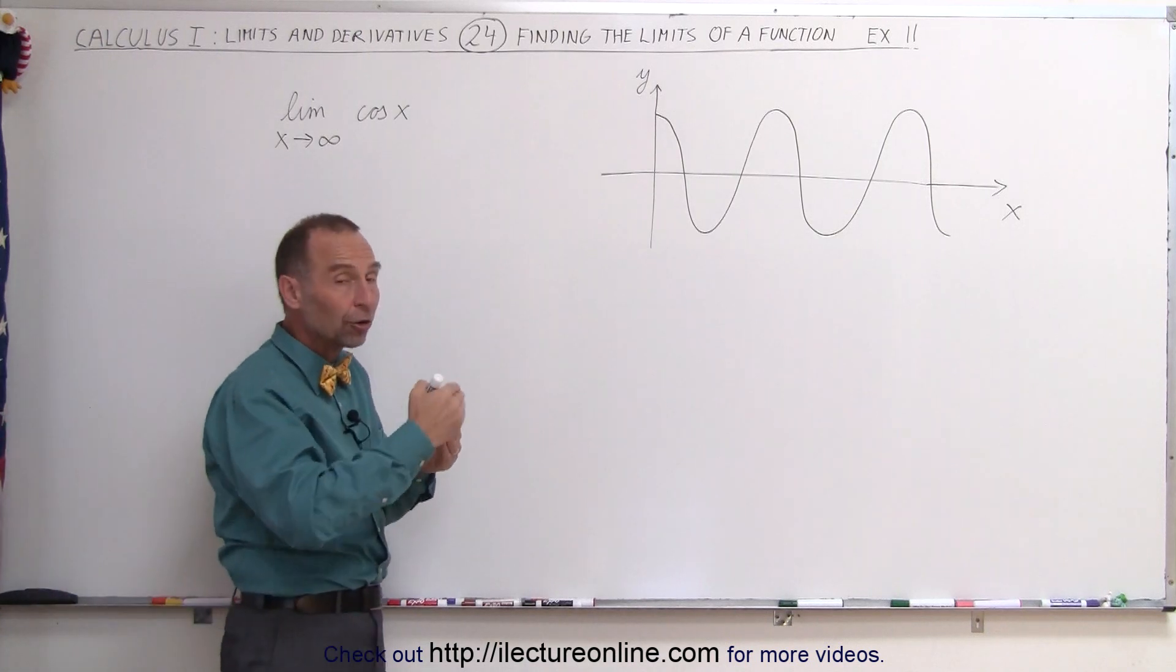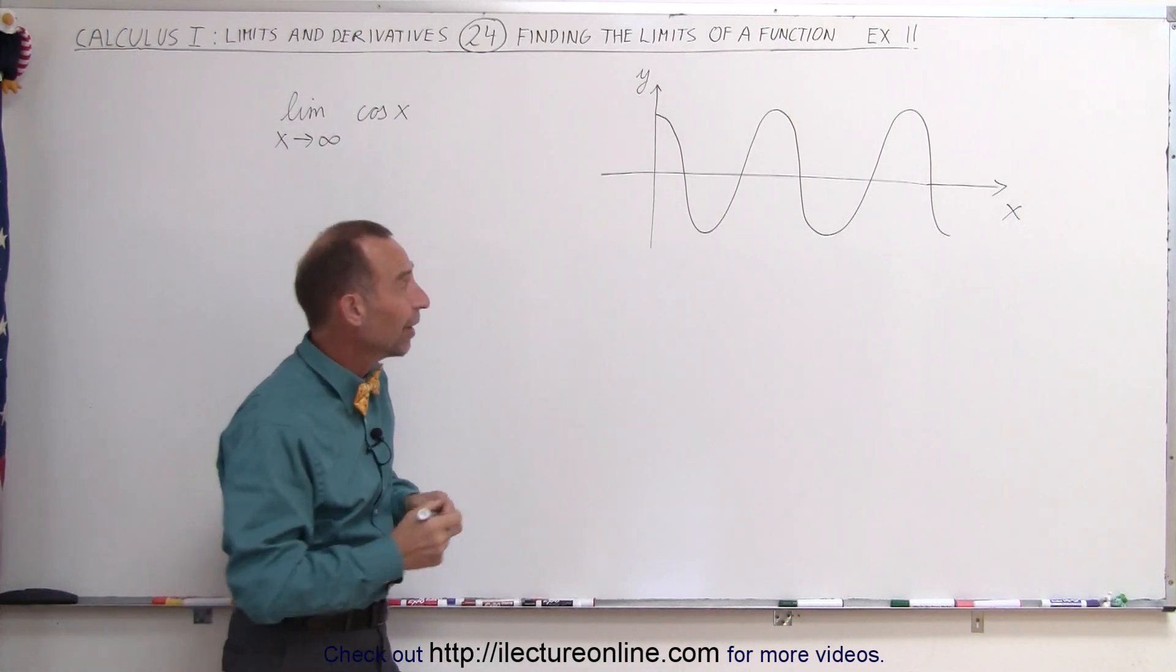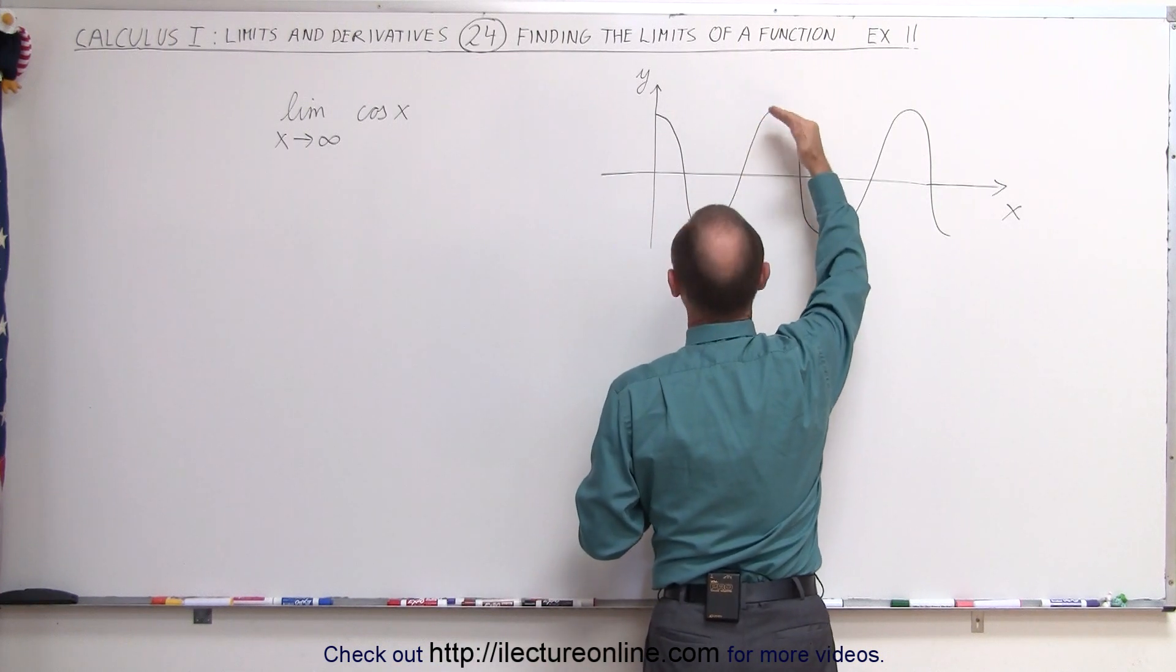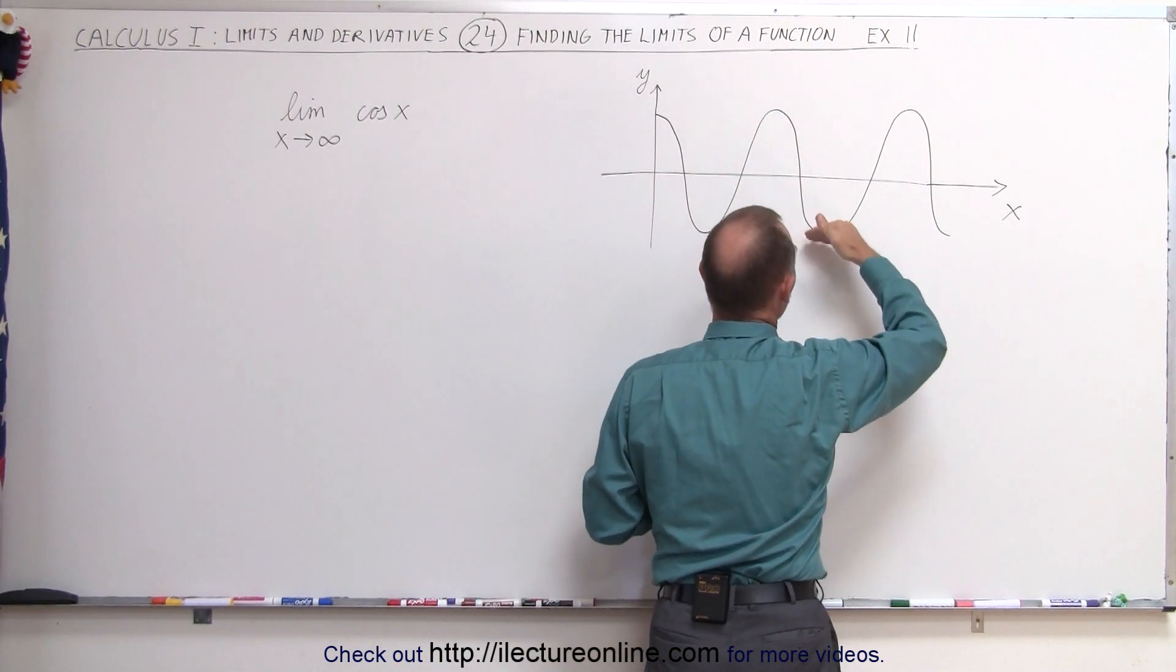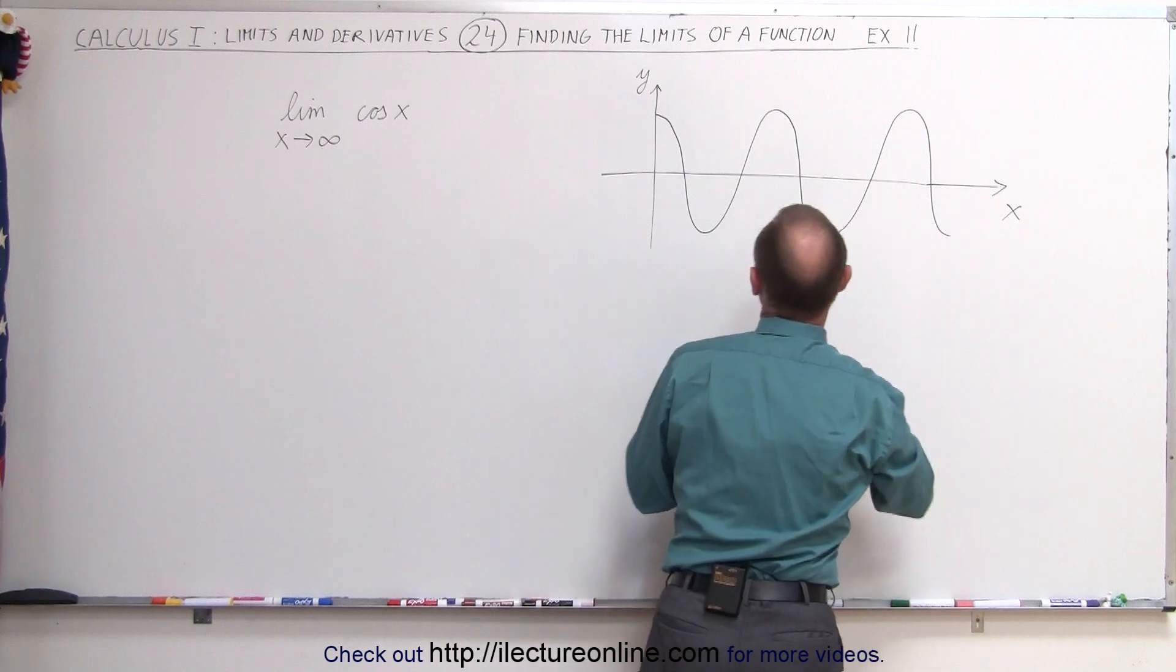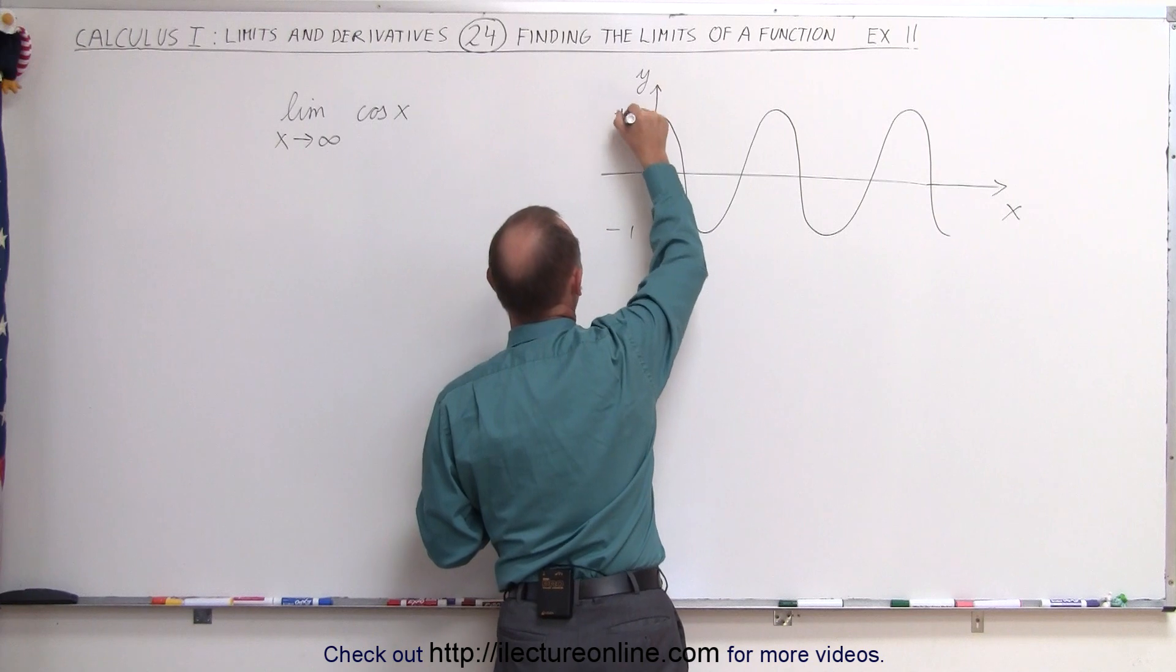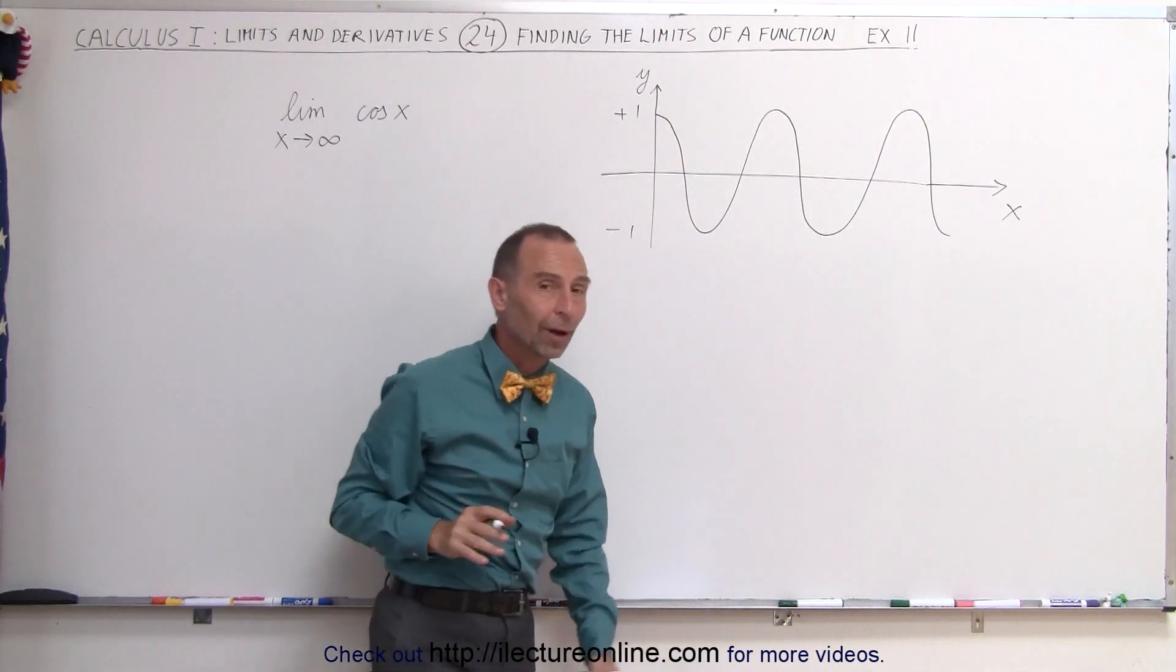The problem is, as you plug in larger and larger values for x, the function, the cosine of x, is going to get a value between positive 1 and negative 1. So the highest value it can take is positive 1, and the lowest value it can take is negative 1.